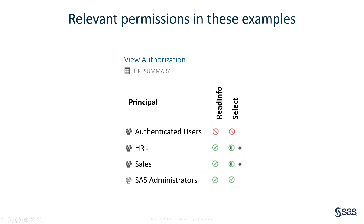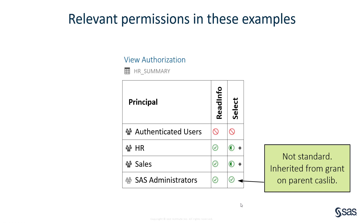The permissions on the table are set up like this. By default, authenticated users get no access to this data. Members of the HR department can see the table and have a row-level grant set up for HR. Members of the sales team can also see the table and have another row-level grant. We've also granted SAS administrators read info and select at the parent CAS library — an inherited select. By default, SAS administrators don't get access to the data, but here we've granted it to conveniently show that there is more data in the table than HR and sales are seeing.